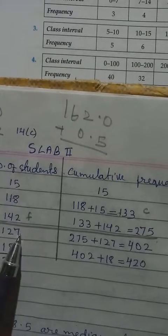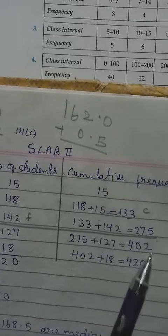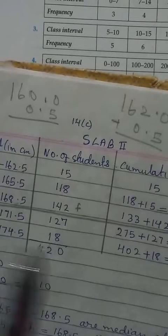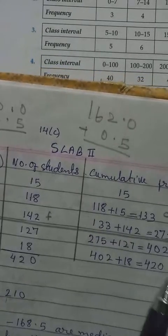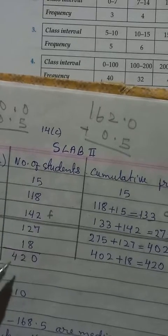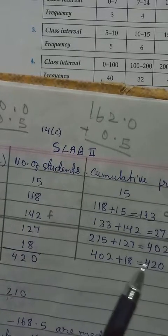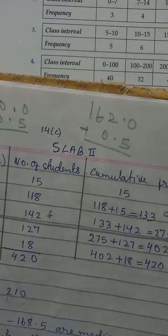275, you add with 127. You get 402. 402, you add with 18. You get 420. Here also you plus, you see. If this one 420 and 420 same, mean we do it properly.